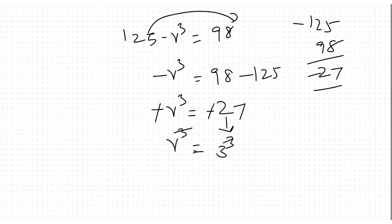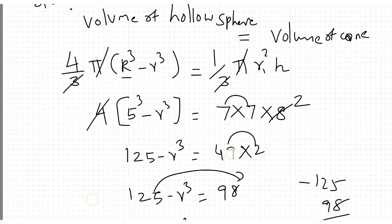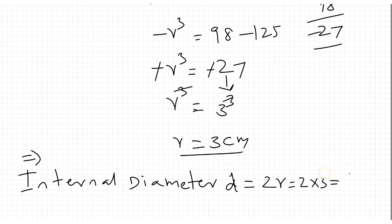Internal diameter: d equals 2 into r, that is 2 into 3, equals 6 cm.